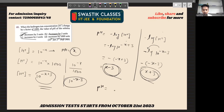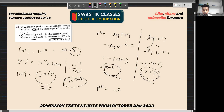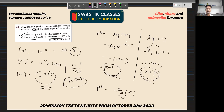pH equals minus log of H+ concentration, base 10. If you change by a factor of 10, the pH changes by 1. If you change by a factor of 100, pH changes by plus or minus 2. Since 1000 is 10 to the power 3, the pH changes by 3 units.